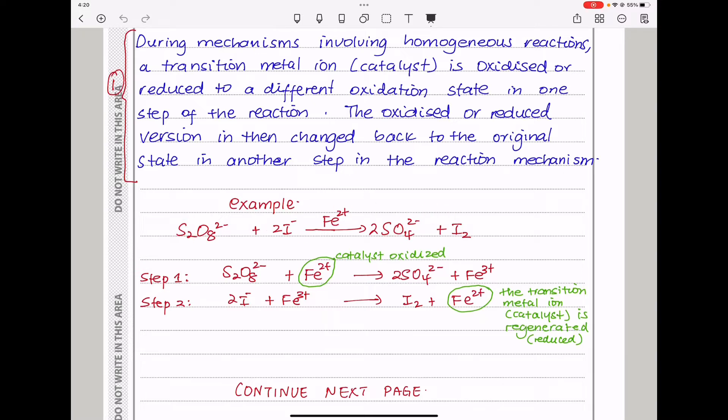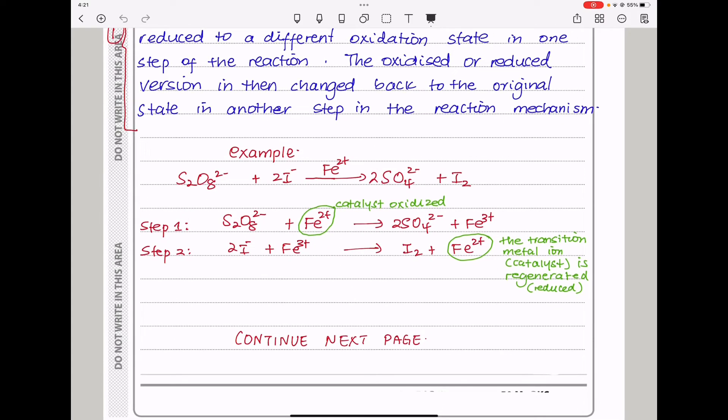The example is this reaction here and again, you didn't have to write this as well. So peroxodisulfate reacts with iodide to form sulfate as well as iodine. This is the reaction. However, in here, we use a homogeneous catalyst because it's also in aqueous phase as the reactants are. This reaction goes on in a two-step mechanism. In the first one, peroxodisulfate reacts with Fe2+. This is the catalyst. The catalyst is going to be oxidized to Fe3+ as this is converted to that. And then, the produced Fe3+ is going to react with the other reactant which is iodide in order to regenerate the catalyst as well as form the other product.